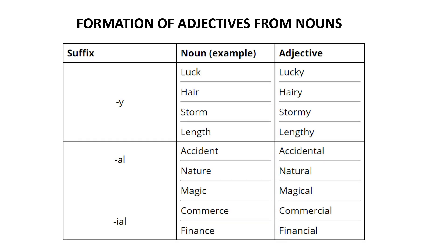Here is a table where in the first column you can see the suffix, in the second column the noun examples. The three suffixes are '-y', '-al', and '-ial'. Adding '-y': luck → lucky, hair → hairy, storm → stormy, length → lengthy. Adding '-al': accident → accidental, nature → natural, magic → magical. Adding '-ial': commerce → commercial, finance → financial.